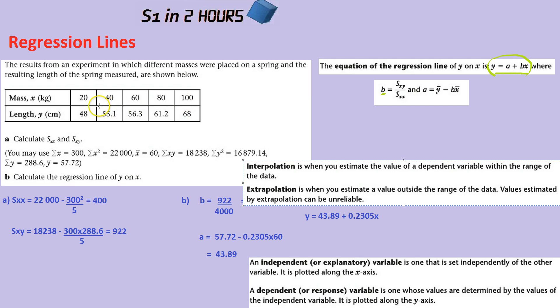So for example, if I was asking you, if I put a mass of 50, what length should I expect? That would be interpolation because I asked you about 50, which is right in the middle of the range. Well, at least it's within the range, it's somewhere between 20 and 100. So it's quite reasonable to use this regression line and try and work out what y would be. That would be interpolation. So in real life, you know, that's a-okay.